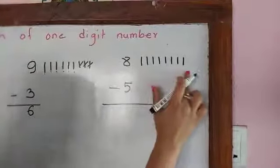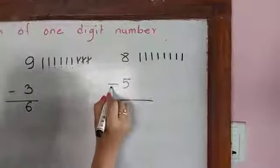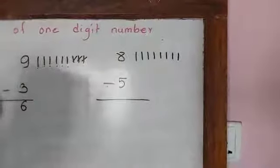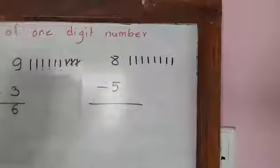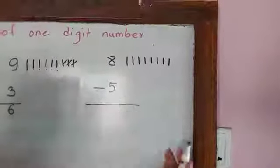We have 8 sticks and this sign - this is not the sign of addition, right? This is the sign of subtraction. That means we need to minus 5. Let's do that.